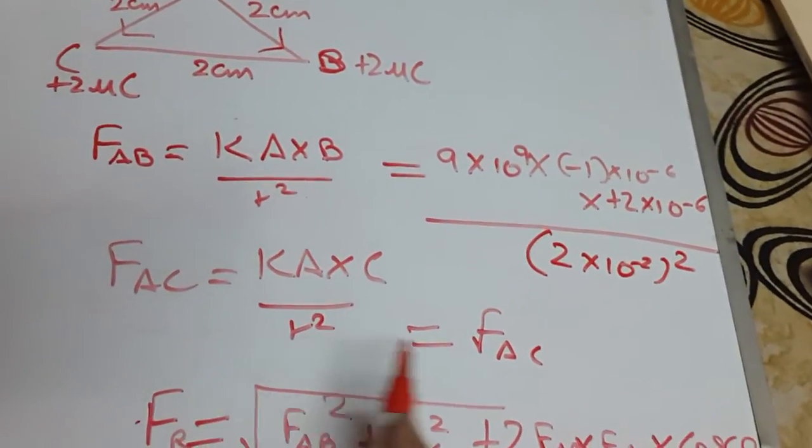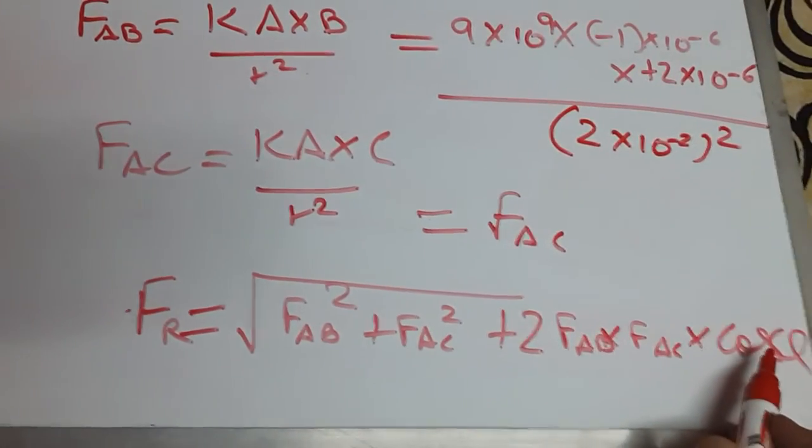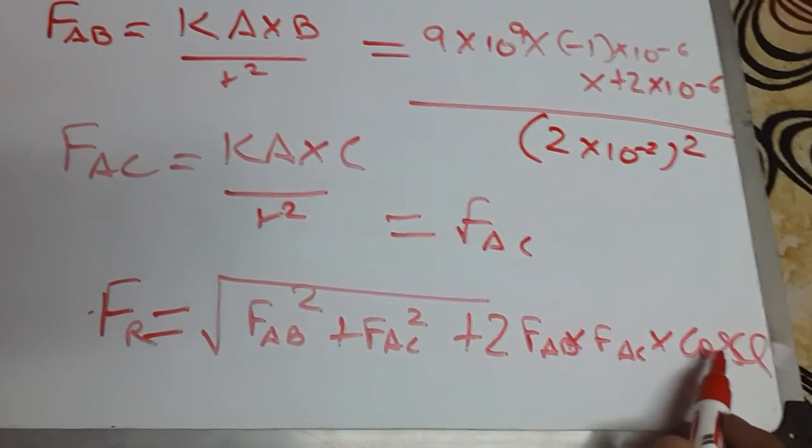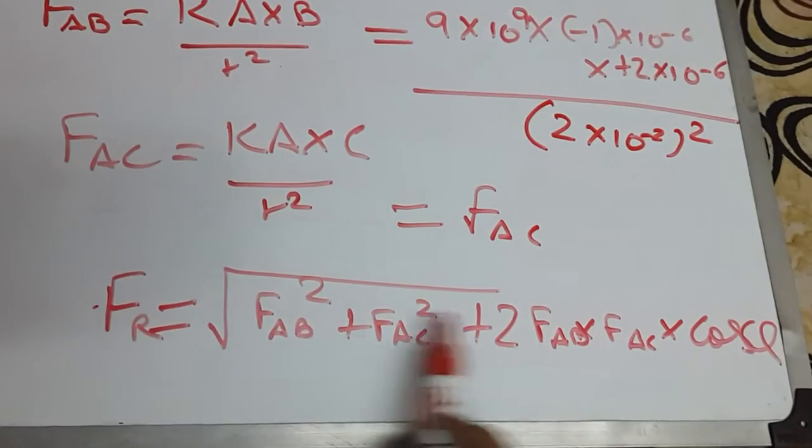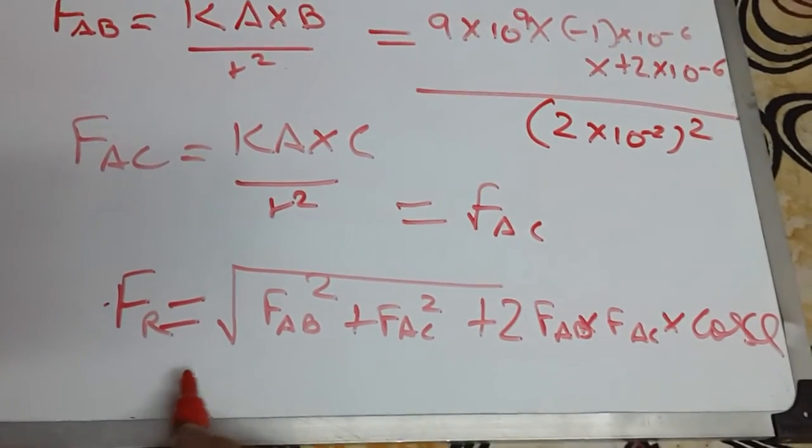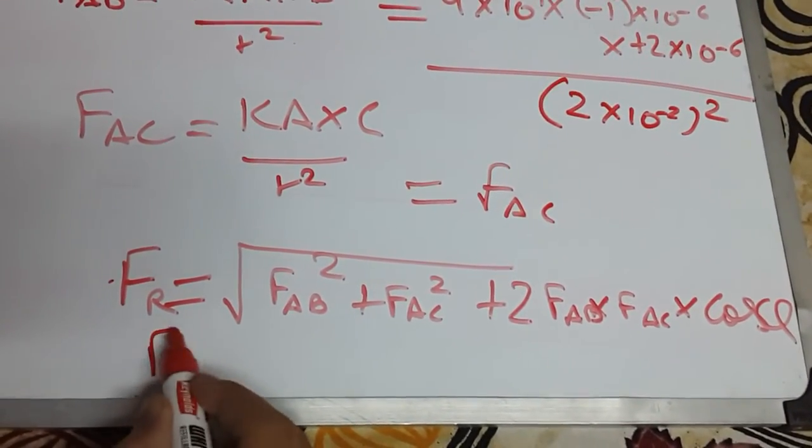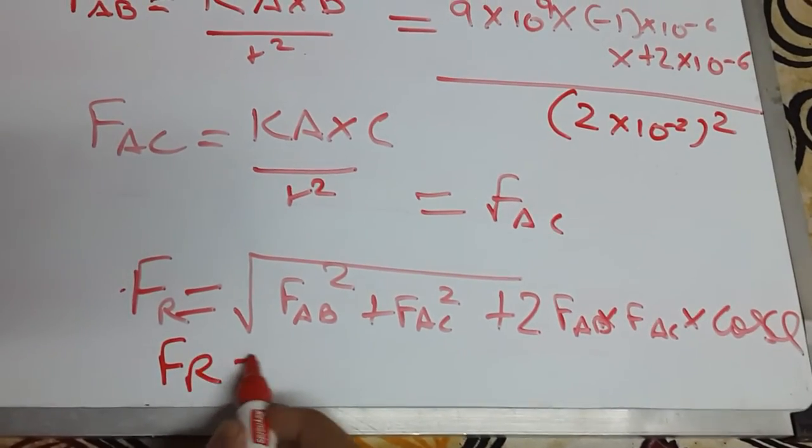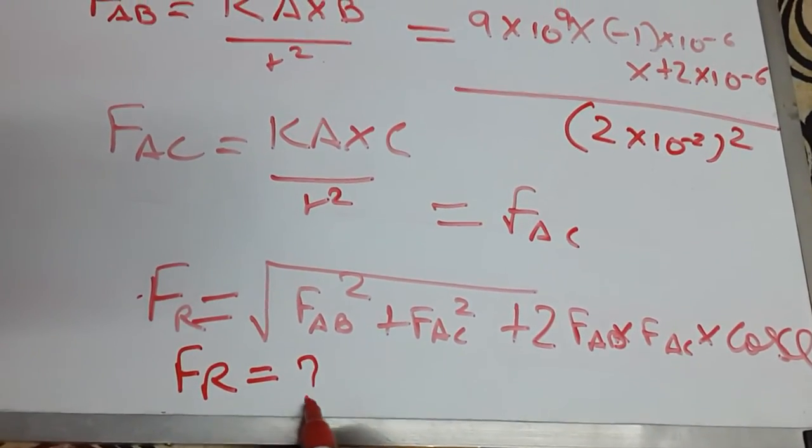This is equilateral triangle. You can put the value of cos theta equals to cos 60. By just putting the values in this, you will get the answer. And this is the way how you will get the resultant force. You can find it.